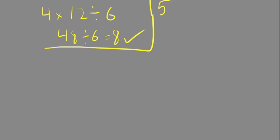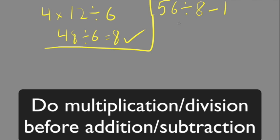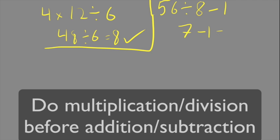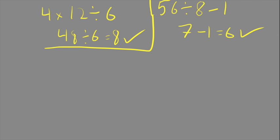Here I've got 56 ÷ 8 - 1. Once again, we do multiplication or division before addition and subtraction. So I'm going to do 56 ÷ 8 first. It gives me 7. 7 - 1 is 6.